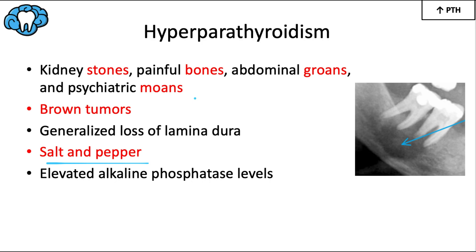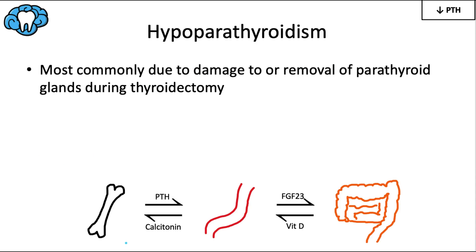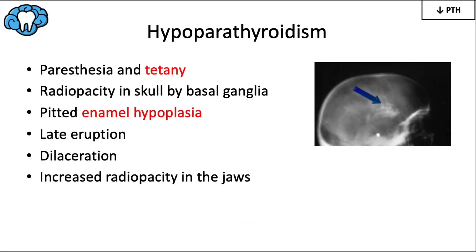On the other end of the spectrum, hypoparathyroidism is most commonly due to damage or removal of the parathyroid glands during a thyroidectomy — performed when the thyroid gland is removed to treat thyroid cancer, a goiter, or similar conditions. Without parathyroid tissue, PTH cannot be secreted as expected, and underproduction of PTH leads to an overaccumulation of calcium in the bone.